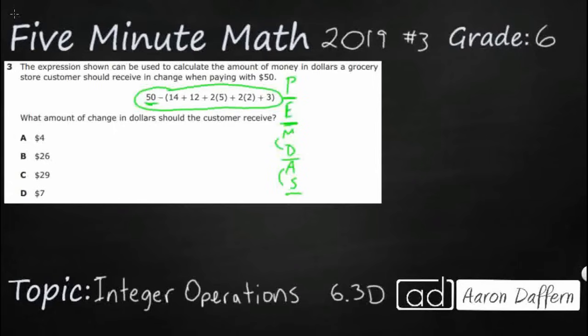Even though those are in order, multiplication and division are equal, so they can go in either order. Same with addition and subtraction. So, this subtraction right here, it is all the way down at the bottom. So, we are going to actually do that last.